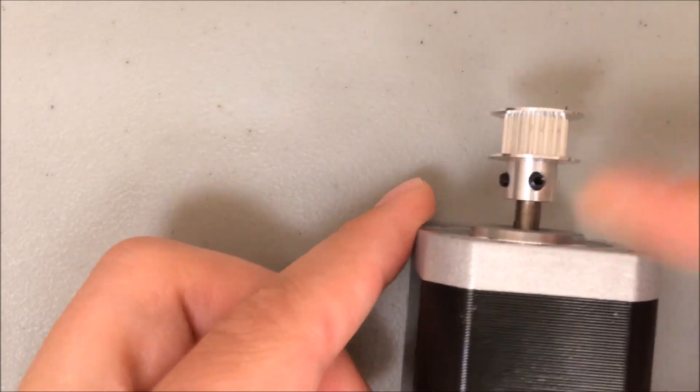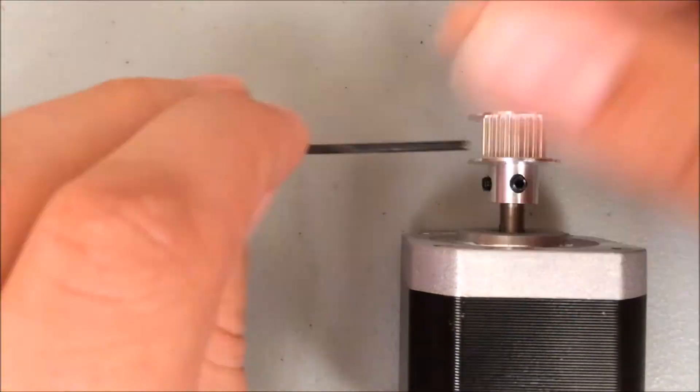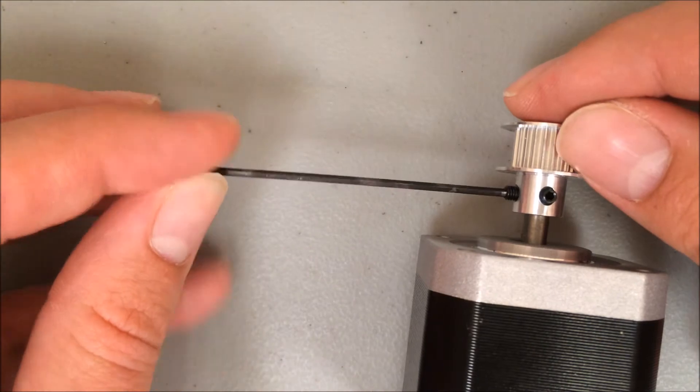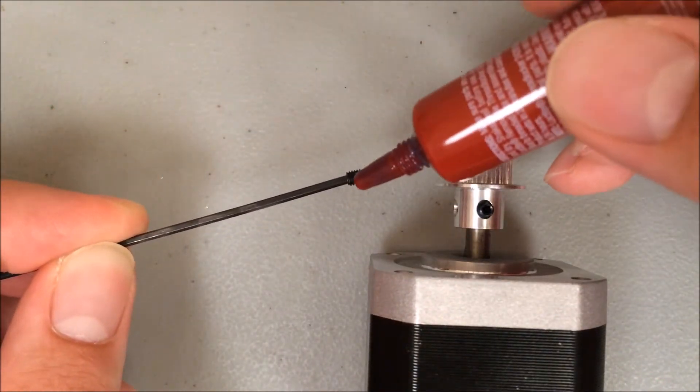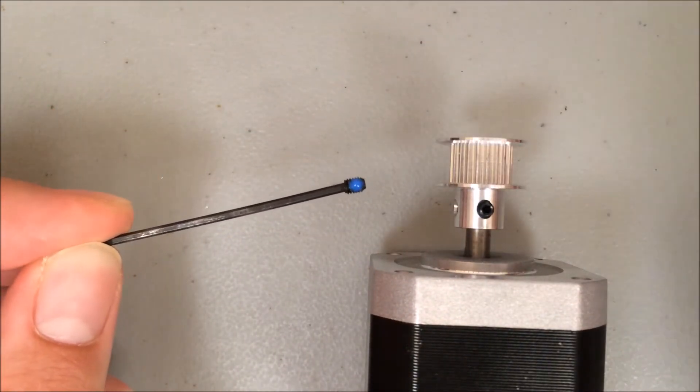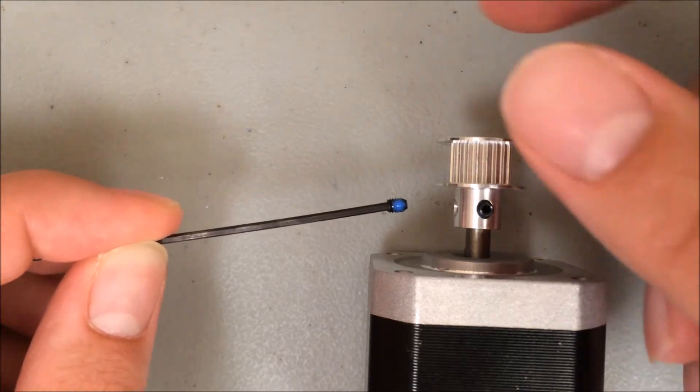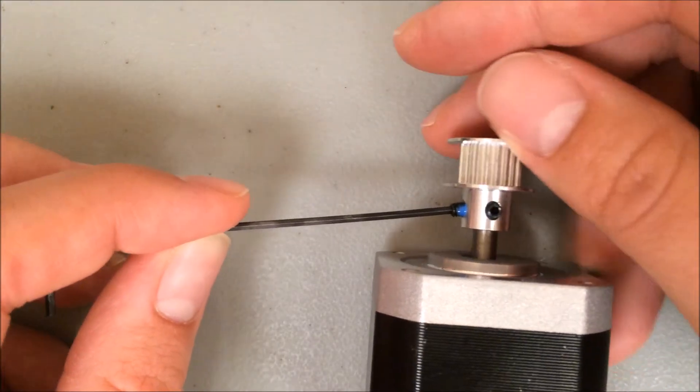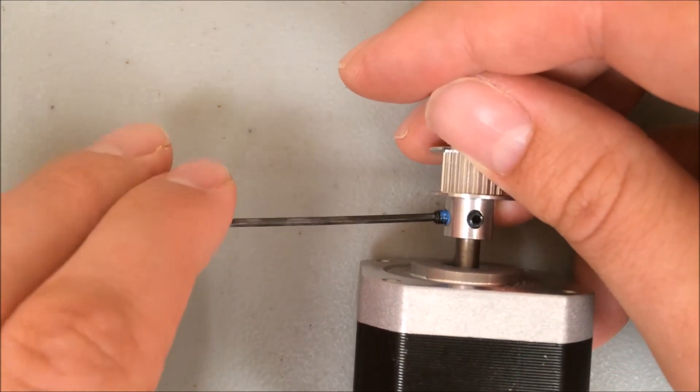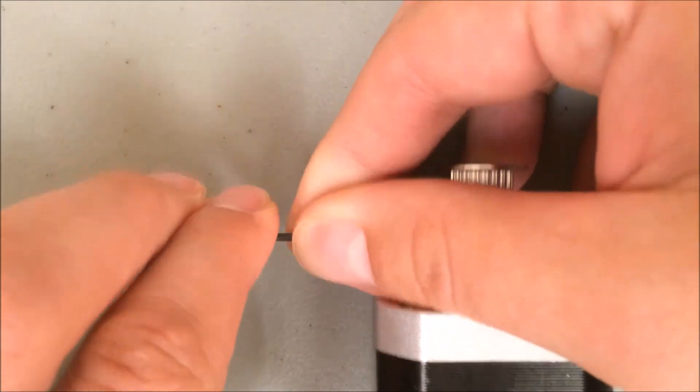I'm going to turn the motor and do the other side. Again, you just need one little drop and that's all it takes. At this point you're tightening these screws permanently so make sure they're nice and snug.